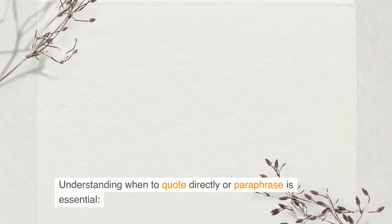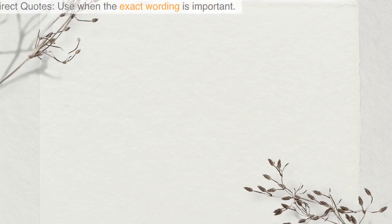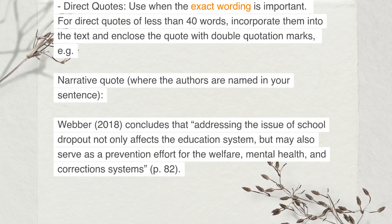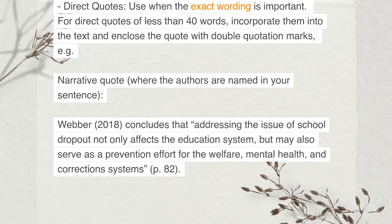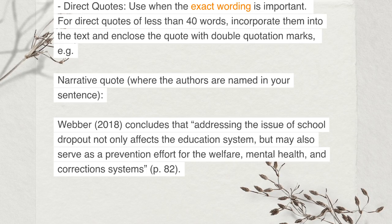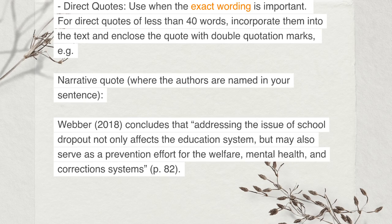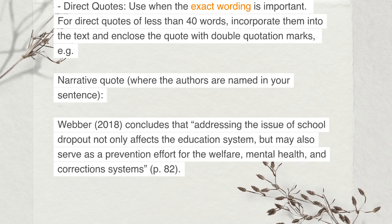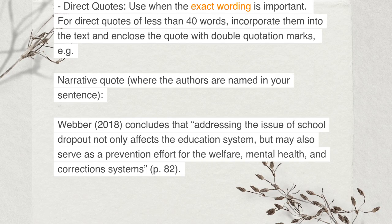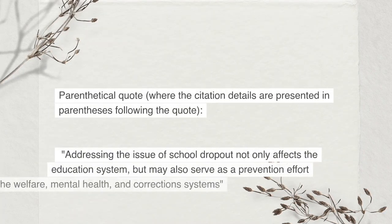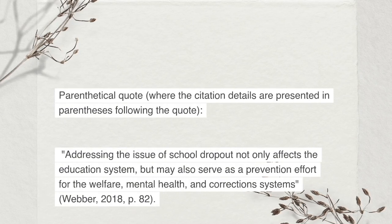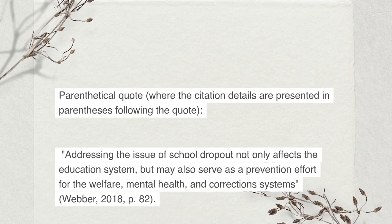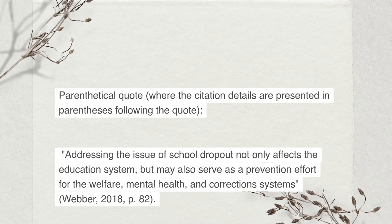Quoting versus paraphrasing: understanding when to quote directly or paraphrase is essential. Direct quotes — use when the exact wording is important. For direct quotes of less than 40 words, incorporate them into the text and enclose the quote with double quotation marks. Narrative quote (authors named in your sentence): Weber (2018) concludes that 'addressing the issue of school dropout not only affects the education system, but may also serve as a prevention effort for the welfare, mental health, and correction systems' (p. 82). Parenthetical quote (citation in parentheses following the quote): 'Addressing the issue of school dropout not only affects the education system, but may also serve as a prevention effort for the welfare, mental health, and corrections systems' (Weber, 2018, p. 82).